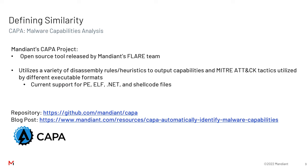When we talk about metric embeddings, we need some measure of similarity. How do we measure the similarity between two binaries, and what auxiliary enrichment data can we use? In this case, we chose to use Mandiant's CAPA tool. CAPA is a capabilities analysis tool released by Mandiant's FLARE team. It is open source and utilizes a variety of rules and heuristics to output both capabilities as well as TTPs used by different executable types — currently PE, ELF, .NET, and shellcode files.